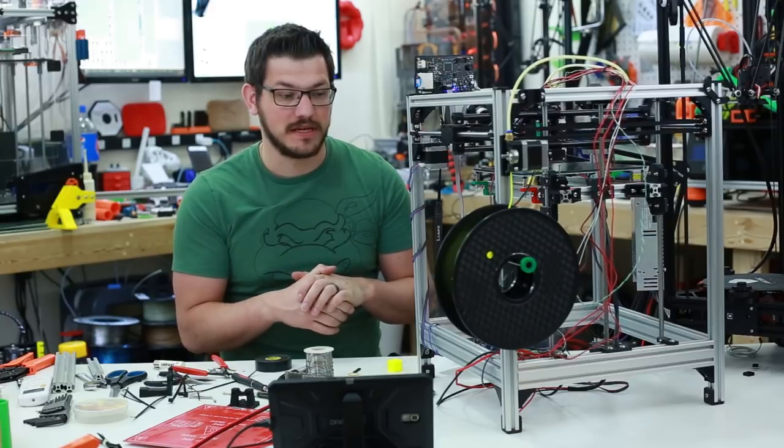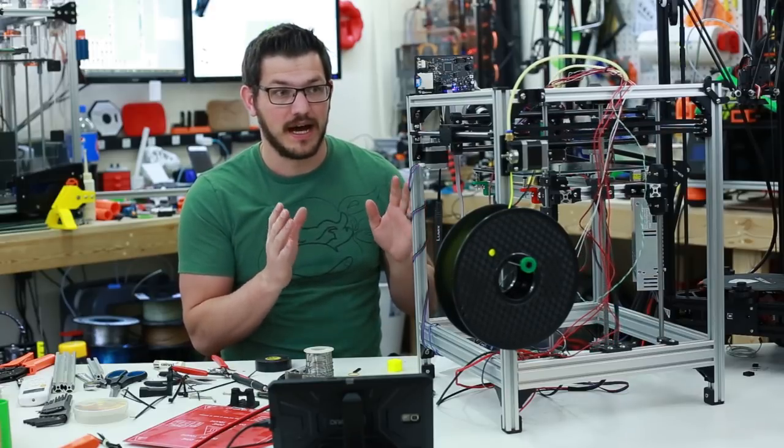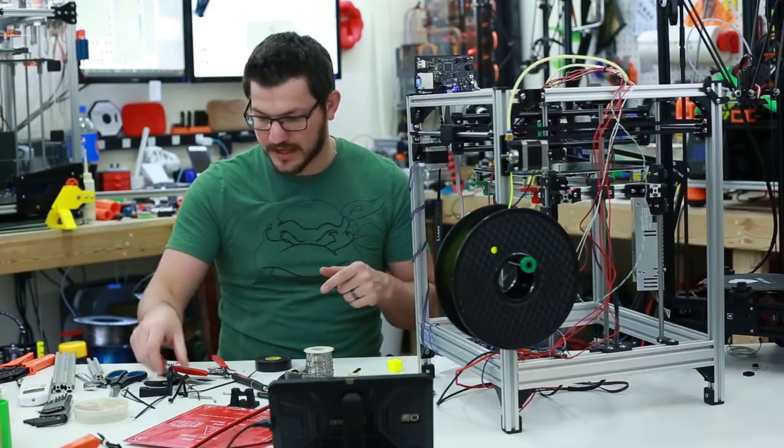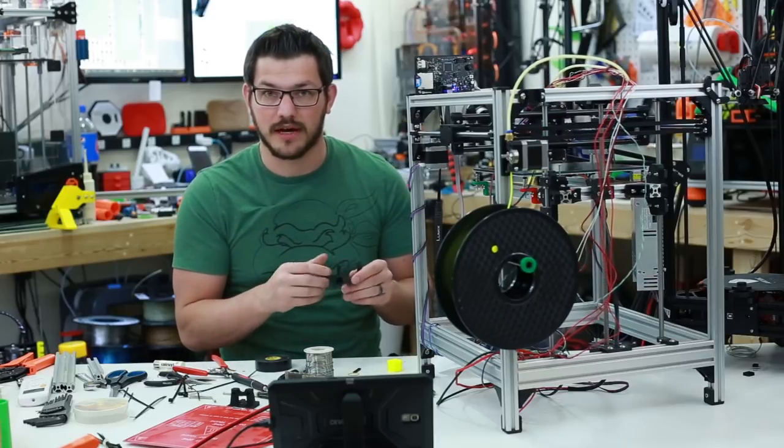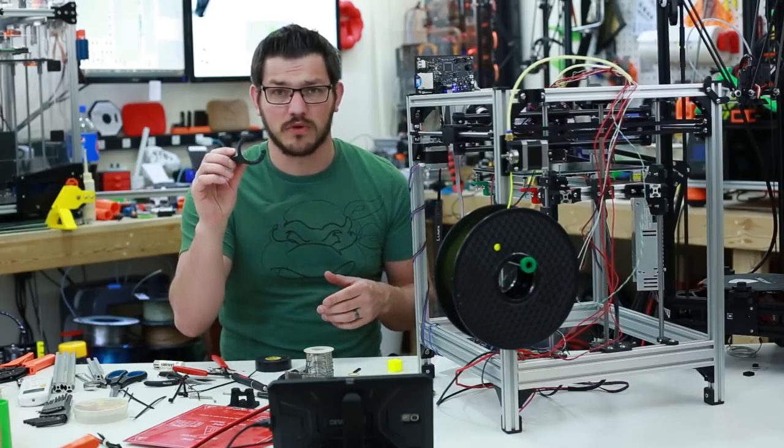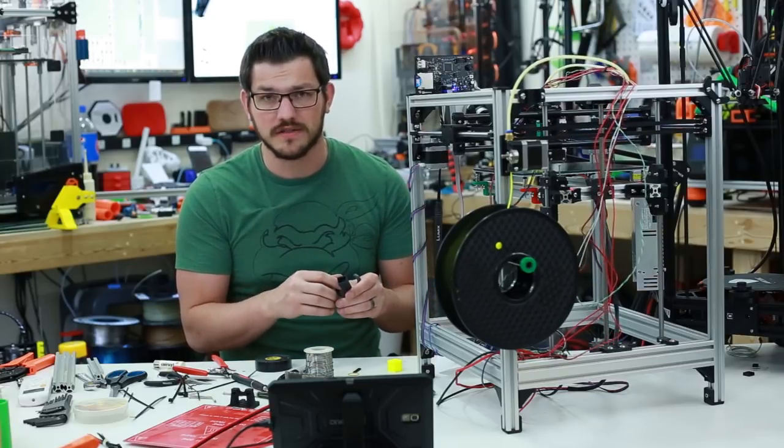Now, part six is going to be more of the electronics and cable management. Once I finish part six, I think I'm going to be able to call this printer complete. I don't think there's anything else I want to change too much. Again, I do have this other fan duct I want to check out. I'm going to do some bridge testing with this version.